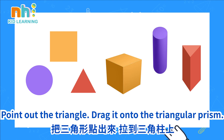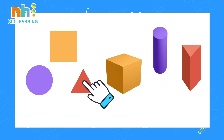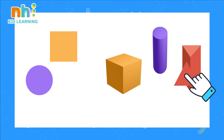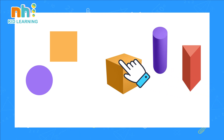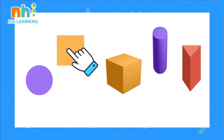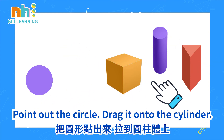Point out the triangle. Drag it onto the triangular prism. Point out the square. Drag it onto the cube. Point out the circle. Drag it onto the cylinder.